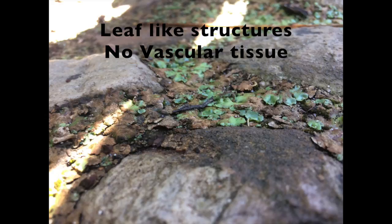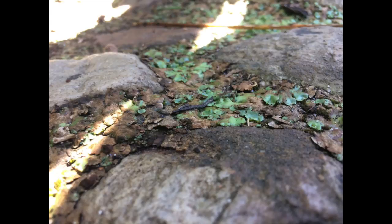Bryophytes include the small plants that we call mosses. Mosses have distinct leaf-like structures. They are not true leaves because they do not have any vascular tissue with xylem or phloem.